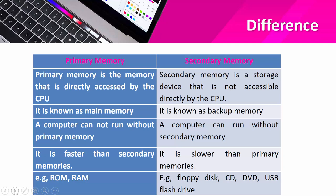Examples of primary memory are ROM and RAM. Examples of secondary memory are floppy disk, CD, DVD, pen drive, and flash drive. This difference can be asked for 2 to 3 marks.